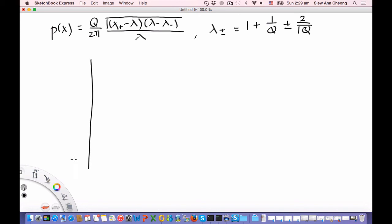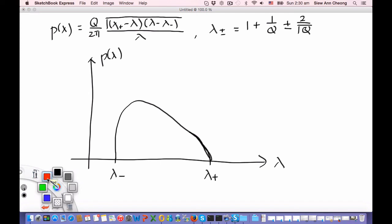It is important to understand from this random matrix theory how to sketch this probability distribution. Let's mark down lambda minus and lambda plus. And your distribution goes like this. So the actual shape depends on Q.